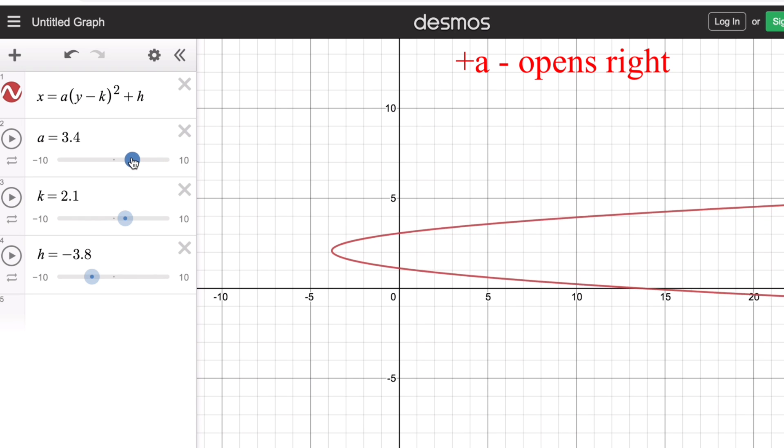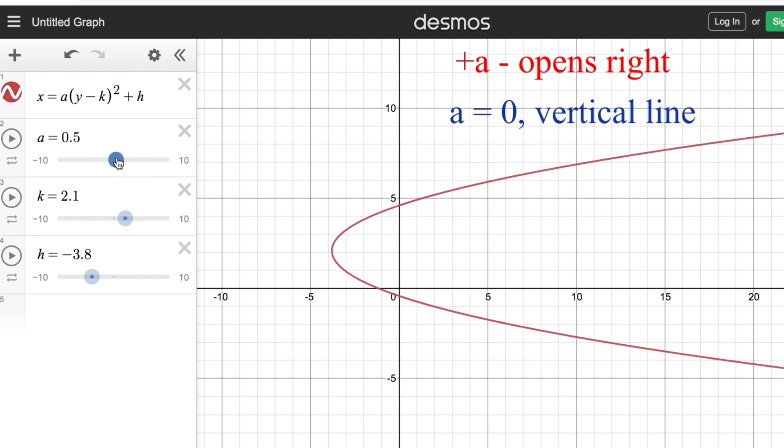Now if a is zero, the graph is a vertical line. On the other hand, if a is negative, the graph opens to the left.